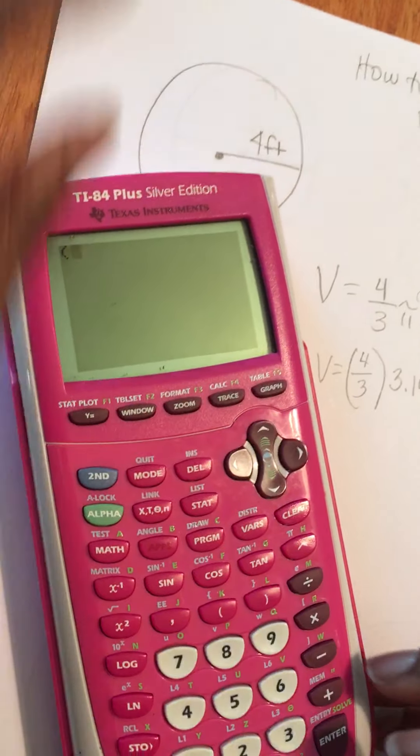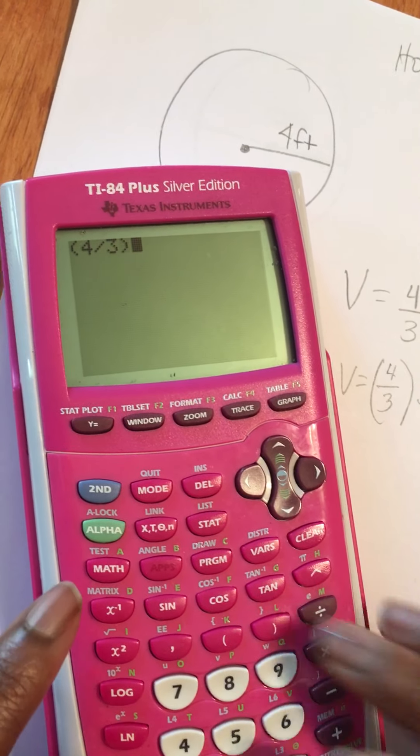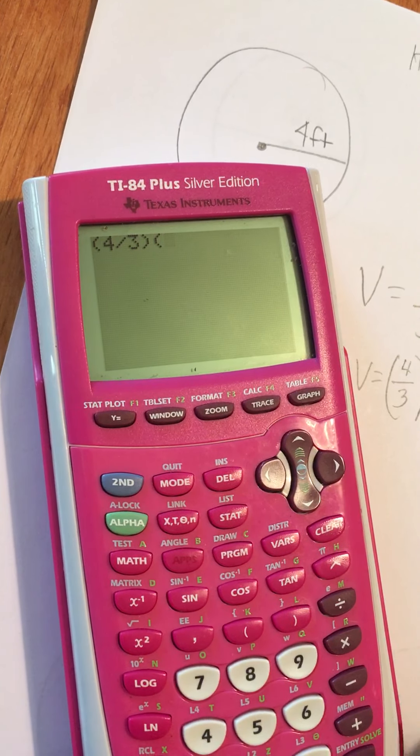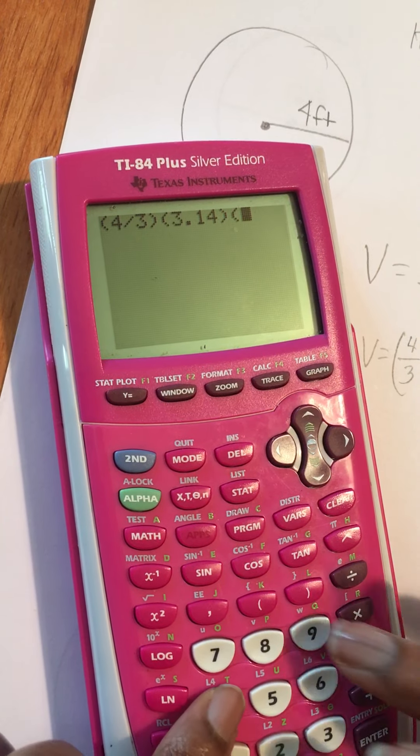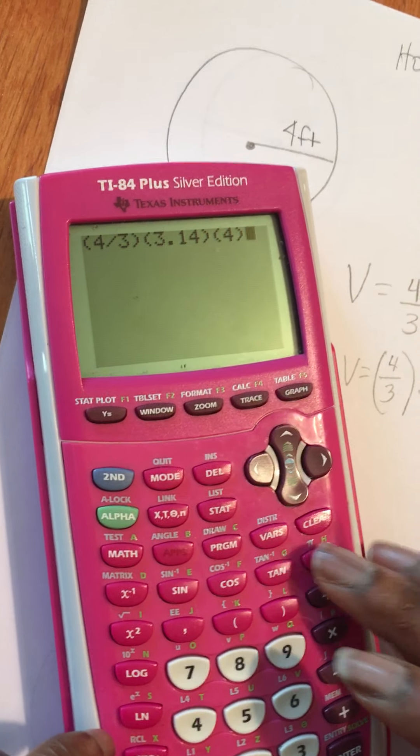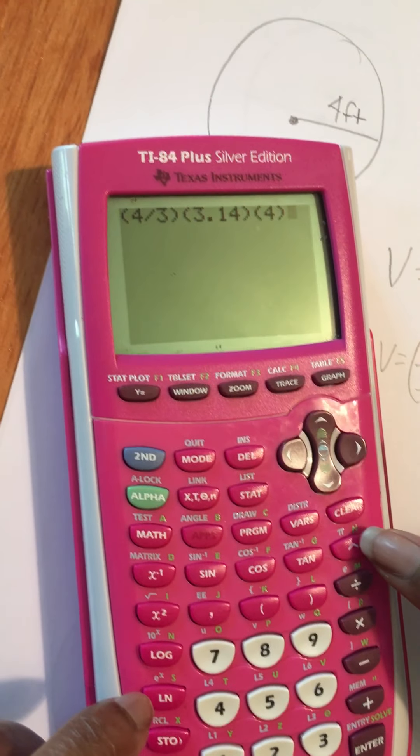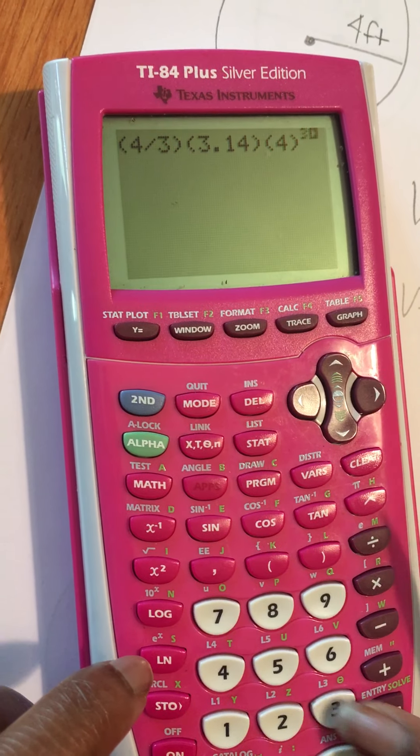I'm going to use my calculator, turn it on, parenthesis, 4 divided by 3, and parenthesis, parenthesis, 3.14, parenthesis, parenthesis, 4, and parenthesis, and do the third power. I'm going to use this button underneath the clear, carrot 3.